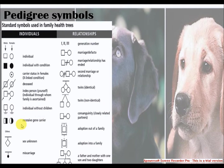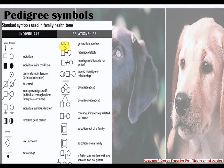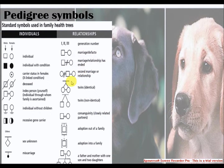Recessive gene carrier, sex unknown, miscarriage. Relationship — 1, 2, 3 generation number, marriage or de facto relationship, marriage or relationship ended, second marriage or relationship, twins — the twins are non-identical.